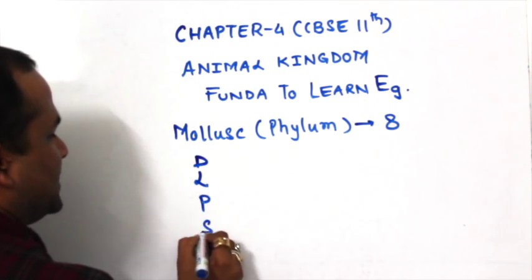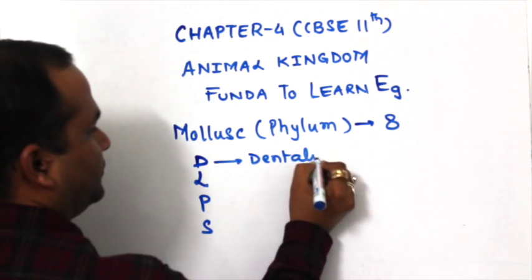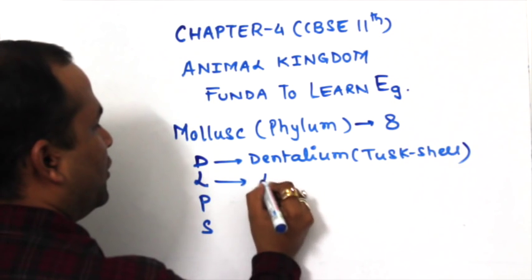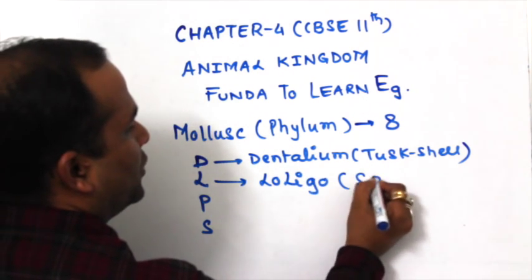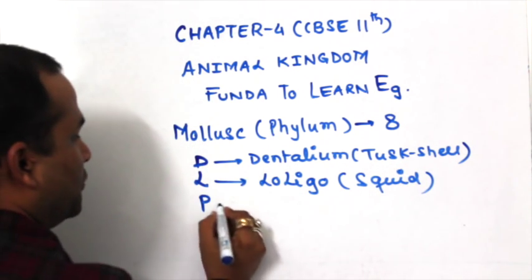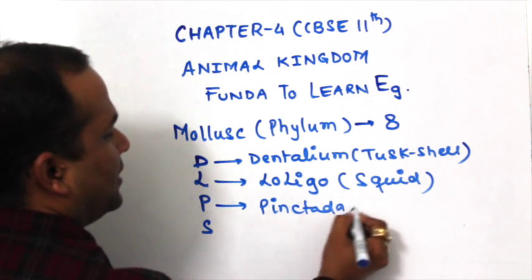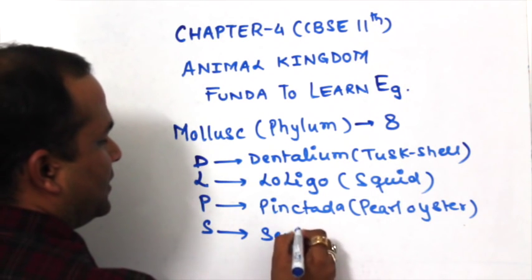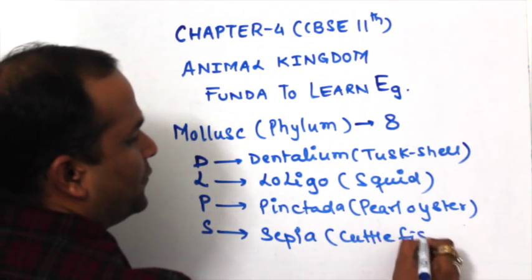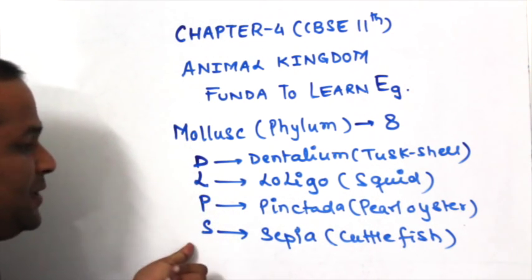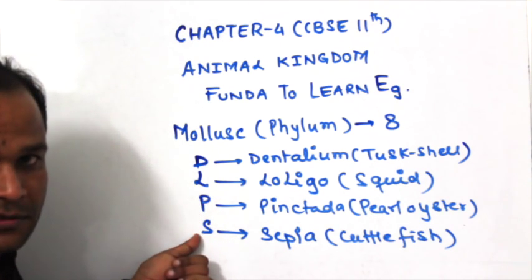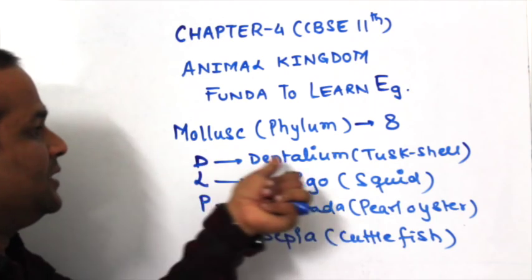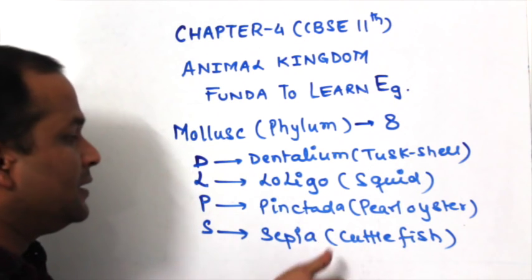The next 4 examples are DLPS — like distance learning programs study material. D stands for Dentalium, the tusk shell. L for Loligo, that is squid. P for Pintada, the pearl oyster. S for Sepia, that is cuttle fish.